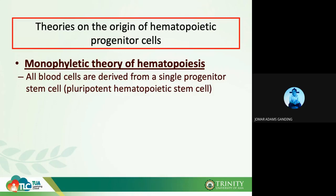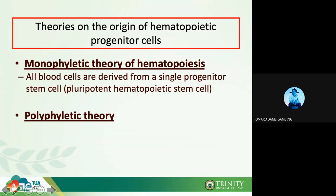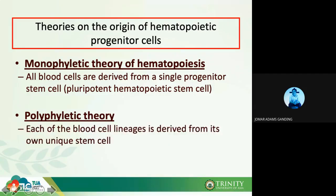That pluripotent hematopoietic stem cell can differentiate into erythroblasts, myeloid precursors, or lymphoid precursors — from one cell giving rise to different cells depending on differentiation. The other theory proposed is the polyphyletic theory. The root word 'poly' means many, so they believe that each blood cell lineage is derived from its own unique stem cell. According to this theory, platelets, red blood cells, basophils, eosinophils, lymphocytes, monocytes, and neutrophils each have their own stem cell.